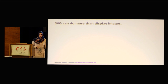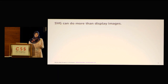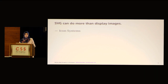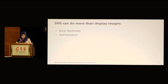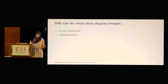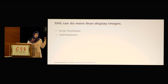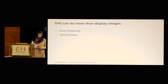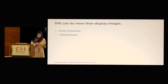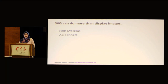SVG is an image format and a document format, so it can do much more than just display images. You can use it for icon systems, and you should. You can use it for creating ad banners because Flash is practically dying — Firefox already blocks it, Chrome is going to block it too, and there have even been calls to kill Flash completely. HTML5 and SVG are a great way to replace those ad banners made in Flash.